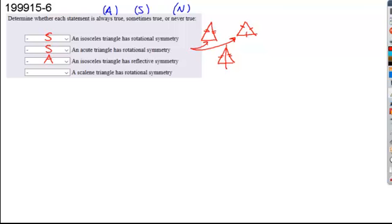And what about a scalene triangle has rotational symmetry? Is there any way to draw a triangle with three different length sides that will map onto itself during a full rotation? No. So this would be never.